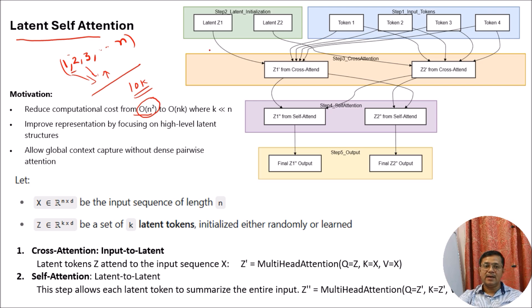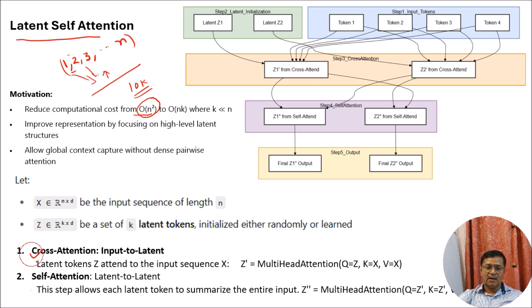Latent attention has a different role because it is not just a single type of attention. It is a combination — as you can see — of cross-attention and self-attention.